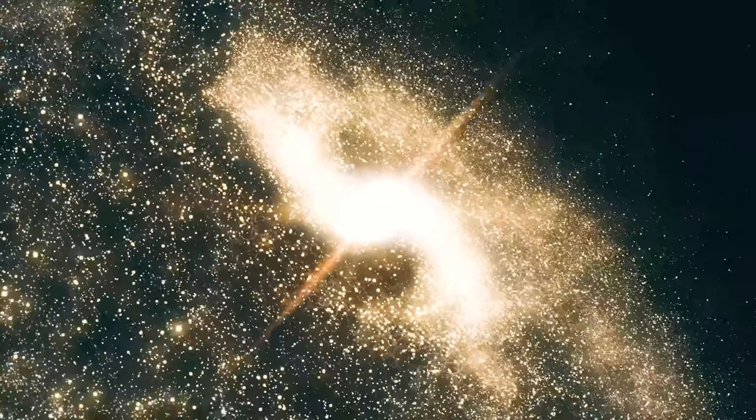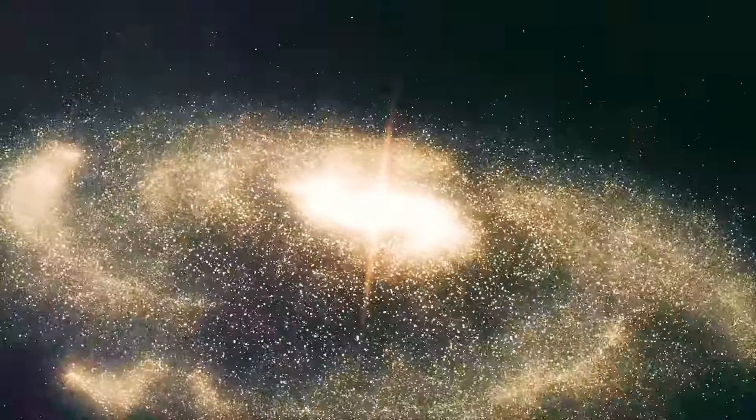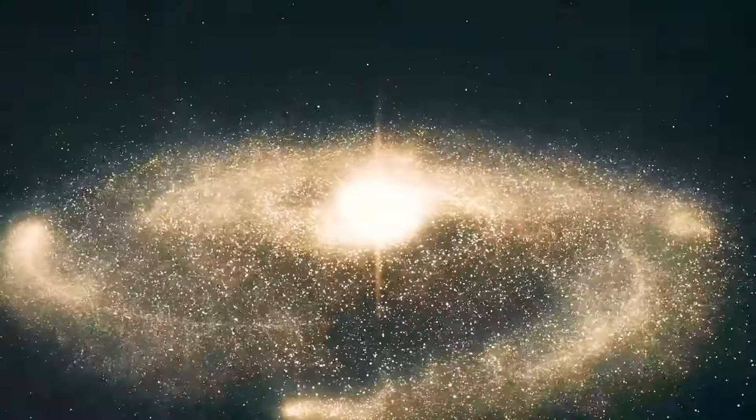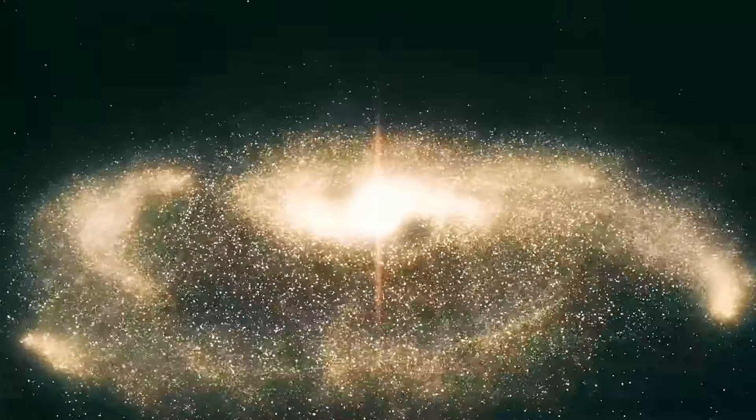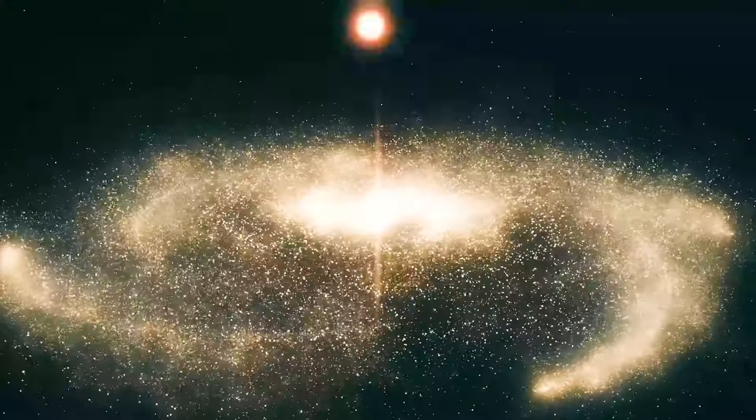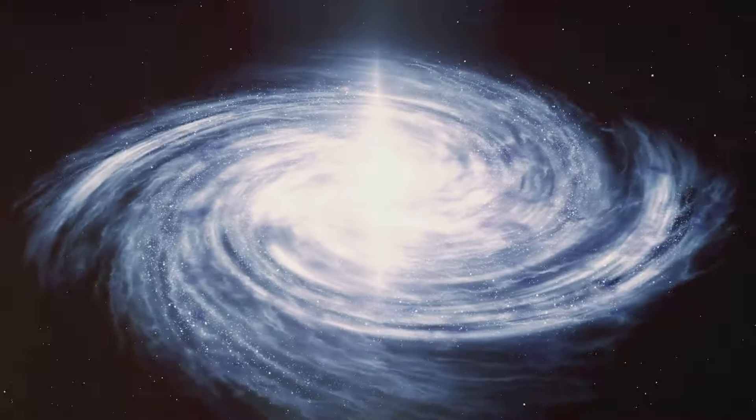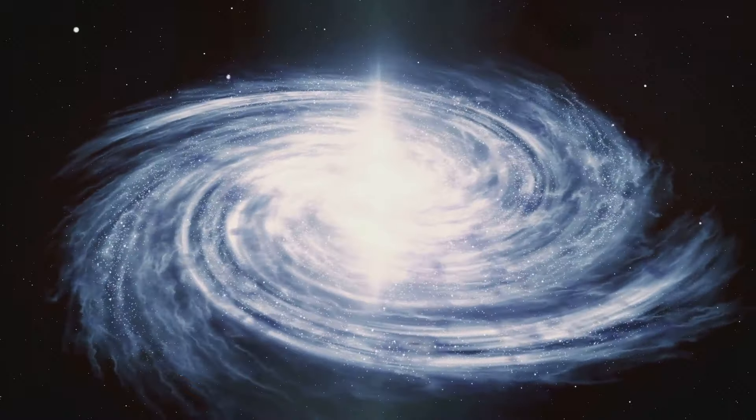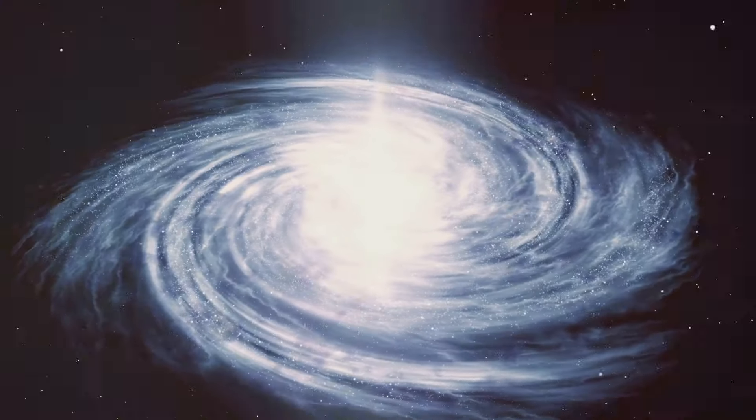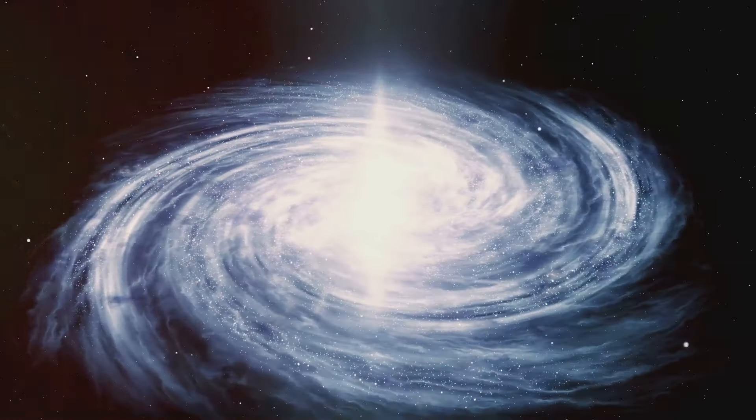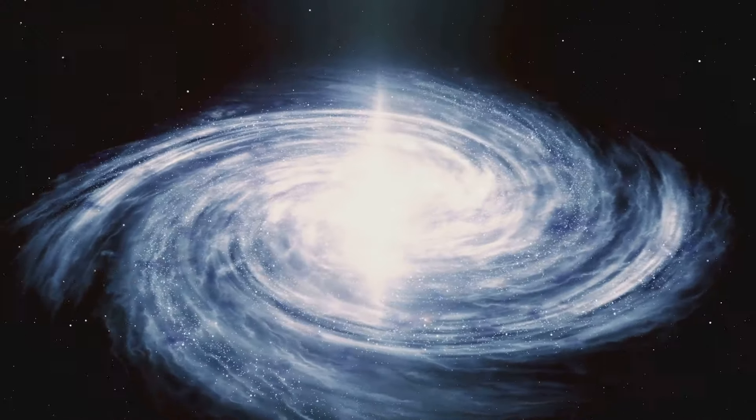But gravitational lensing isn't the only clue. Another telltale sign of dark matter comes from the rotation of galaxies. You see, galaxies rotate at such high speeds that without the extra gravitational pull of dark matter, they would tear themselves apart. However, they remain intact, spinning like cosmic tops. This suggests that there's more than meets the eye. There's an unseen force at work, holding these galaxies together. That's where dark matter comes into play.